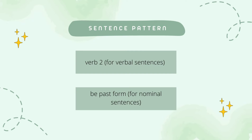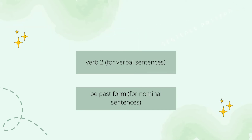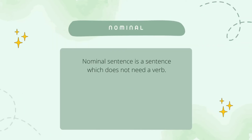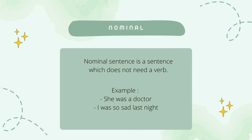I will explain it to you. Verbal sentence is a sentence which needs a verb. For example, 'she ate rice' and 'I drank water.' While nominal sentence is a sentence which doesn't need a verb. For example, 'she was a doctor' and 'I was so sad last night.'